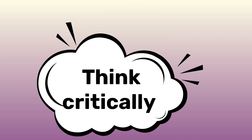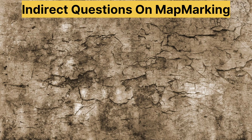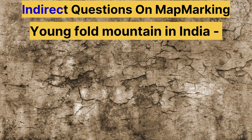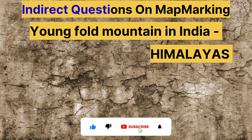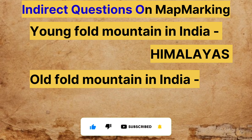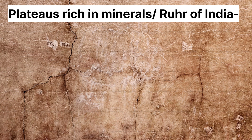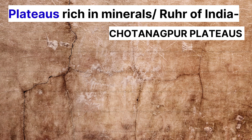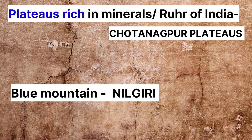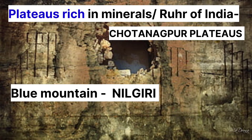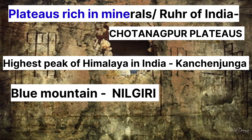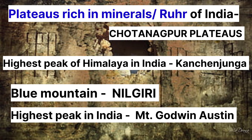Let's start the indirect questions on map mocking. The young fold mountain in India is the Himalayas. The old fold mountain in India is the Aravallis, located in Rajasthan. The plateau rich in minerals, also called the roof of India, is the Chota Nagpur Plateau. The Blue Mountain, located in Tamil Nadu, is the Nilgiris. The highest peak of the Himalayas in India is Kanchenjunga. The highest peak in India is Mount Godwin Austen, also called K2.